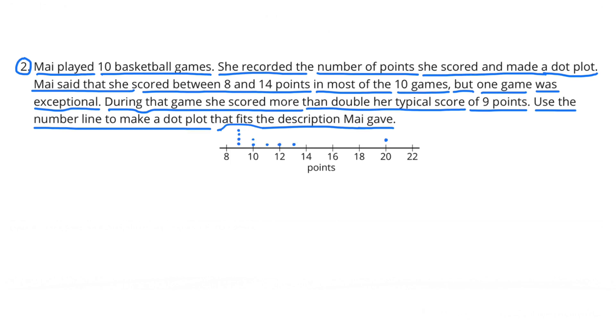There's a variety of ways to answer this. But first I'd like to plot the exceptional game where she more than doubled her typical score of 9 points. So if I double 9 points I get 18 and she said that it would have been more than double 9 points. So I'm going to put a dot at 20 to represent that game.